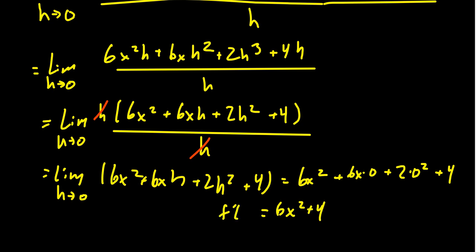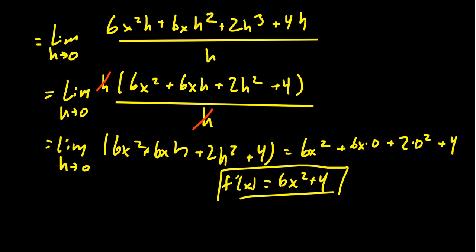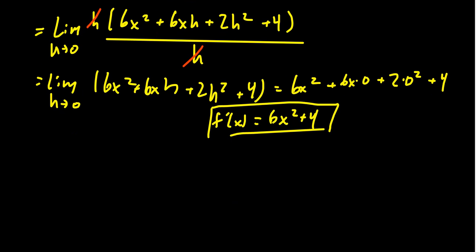And so this right here is the derivative of our original function. Recall, y = 2x³ + 4x. So now that we've computed the derivative, we're now in a position where we can evaluate the derivative to find specific tangent lines if we wanted to.